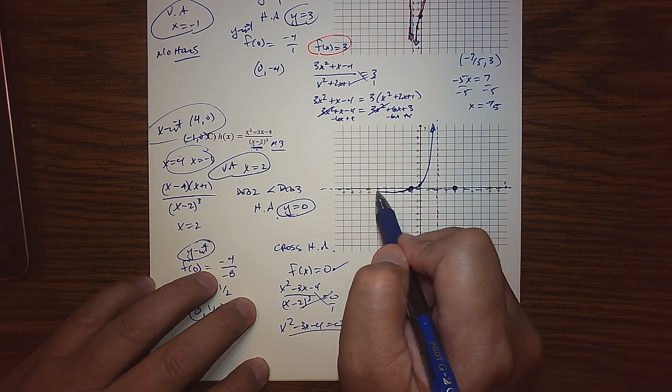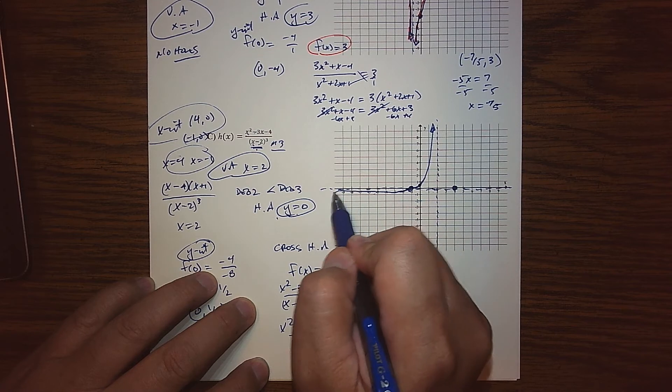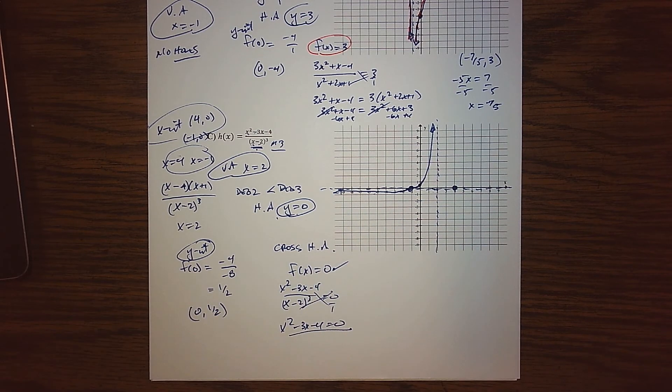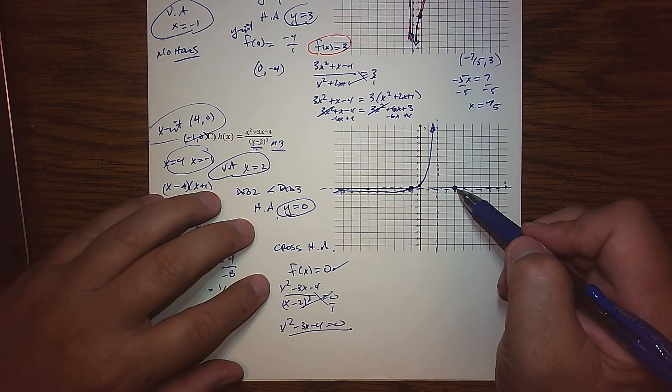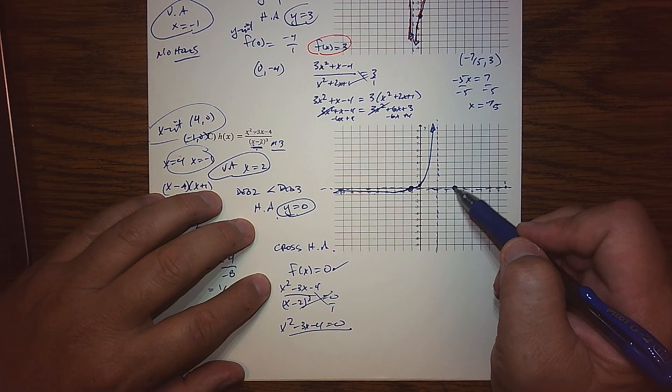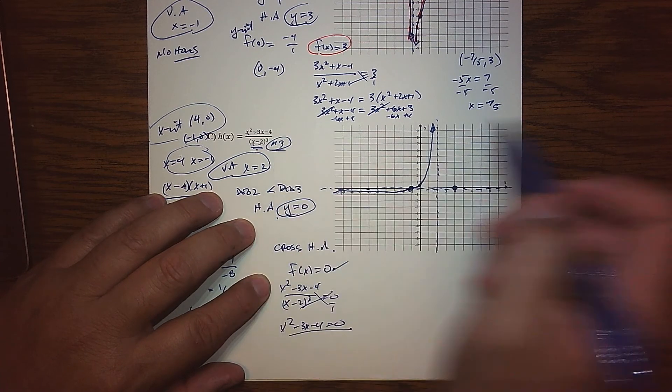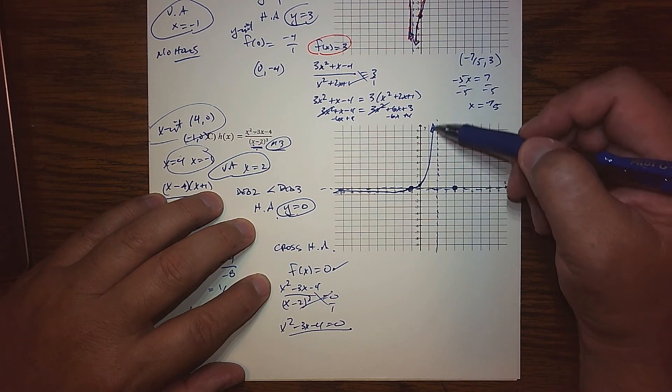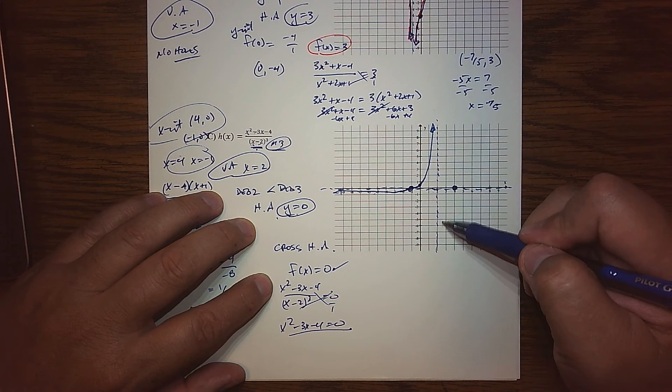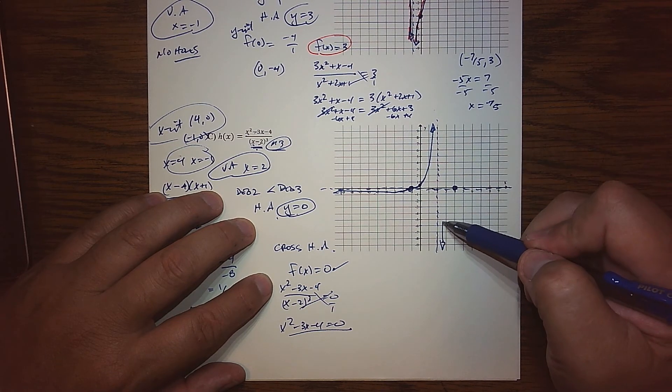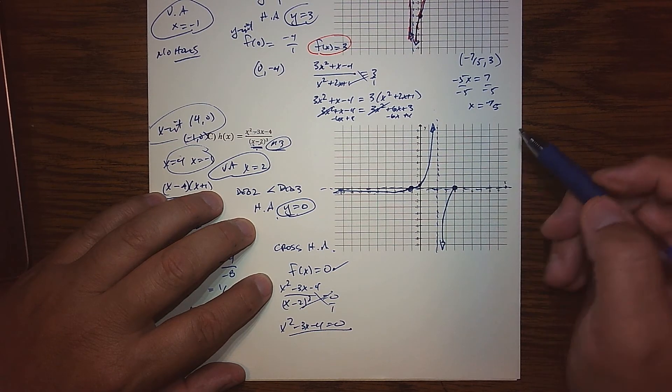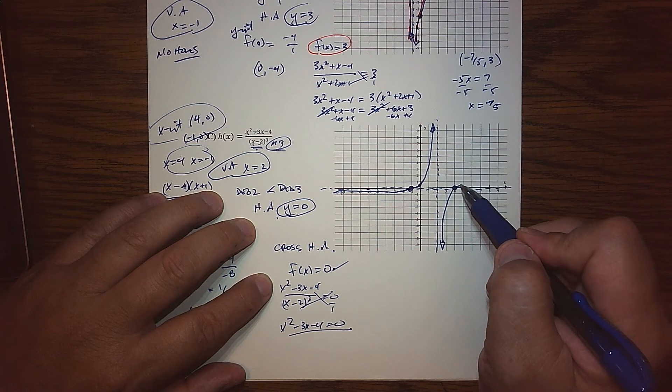Because as we approach 2 from this direction, we're already above the x-axis, and if I was to go down, we would have found another x-intercept, and we didn't. So we have to be doing this. Here we're crossing, so maybe it's coming down a little bit, but eventually it has to come back up and hug the x-axis because that's my horizontal asymptote. Over here, well, what I'm going to do is use the fact that we know the multiplicity is 3.